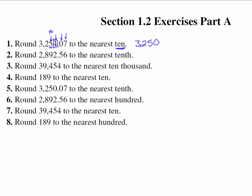Number 2, round 2,892.56 to the nearest tenth. So again, let's look at them, this is the ones column, the tens column, the hundreds column, the thousands column, the tenths column is right there. So we need to look at the 6 right behind it. It's larger than a 5, so that will move this one up. So we are at 2,892 point, and that rounds up to a 6.